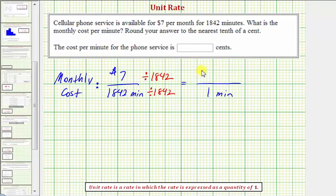So we have approximately .004 dollars per minute. And we did round this, so let's change this to an approximation symbol.